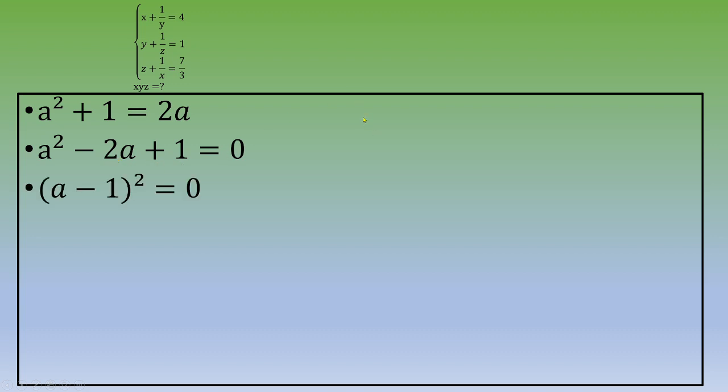And this is a remarkable identity, so you end up with a minus 1 squared equals 0. You've got a unique solution: a equals 1.